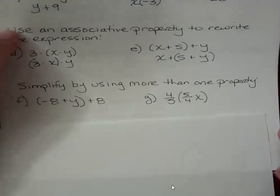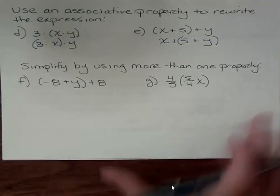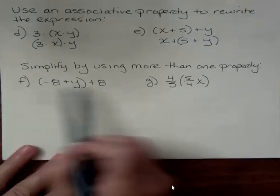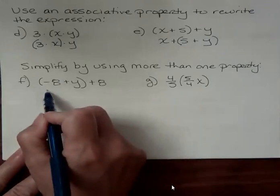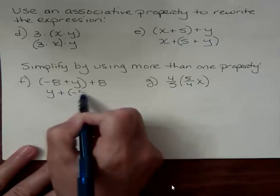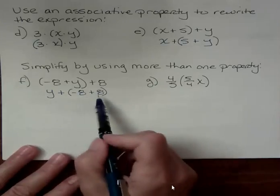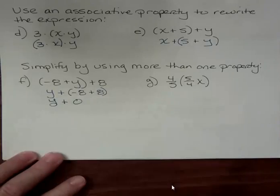And now here, simplify by using more than one property. We have two different examples. For the first one, I'm going to use a few different properties. I'm going to rearrange this, I'm going to change the order, and I'm going to change the grouping. So I'm going to use associative and commutative, and I'm going to rewrite this as y plus negative 8 plus 8. So I just used the property that allows me to change the order, that's commutative, and the associative that changed the grouping. And the next thing I'm going to do is say, wow, well, I have opposites. So I've got the additive inverses going on, and when I have the additive inverses, I get 0.